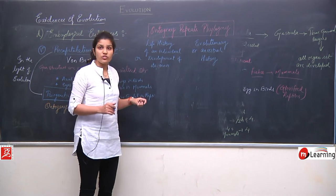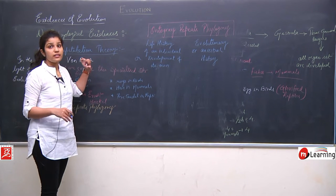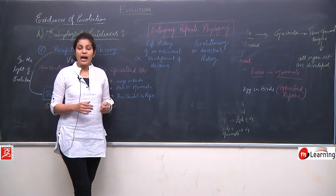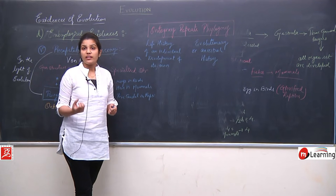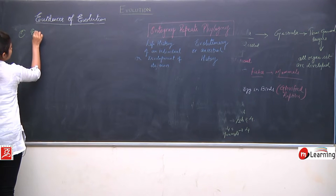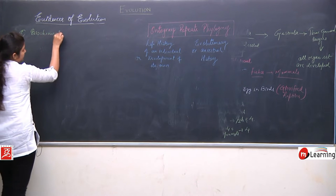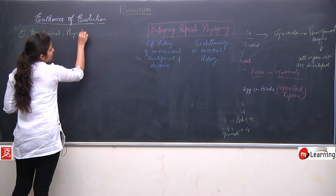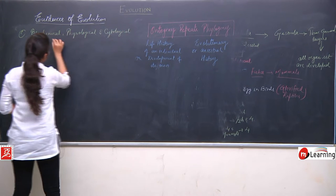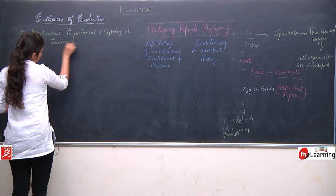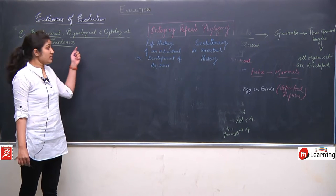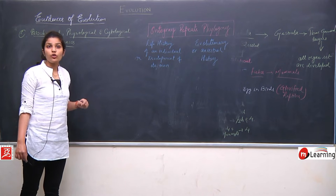This completes our fourth type of evidence — embryological evidences — in the category of evidences of evolution. The last category we are going to take is biochemical, physiological, and cytological evidences.